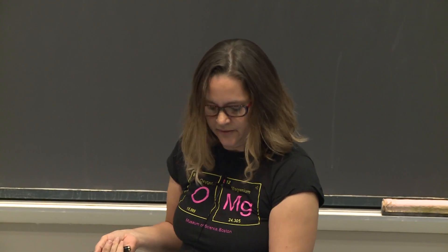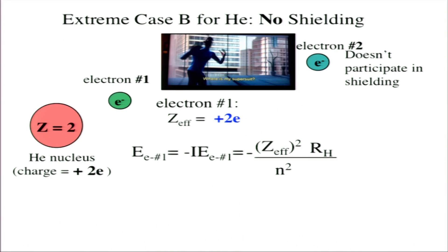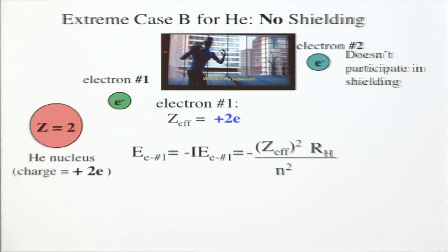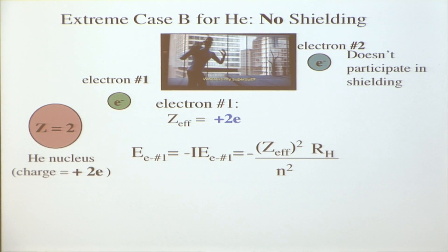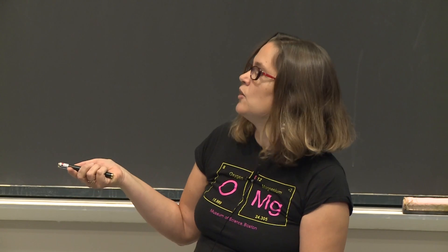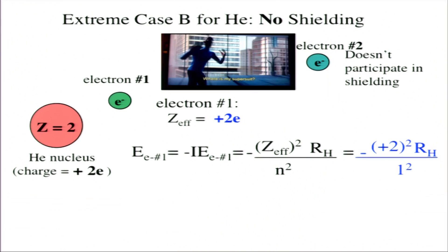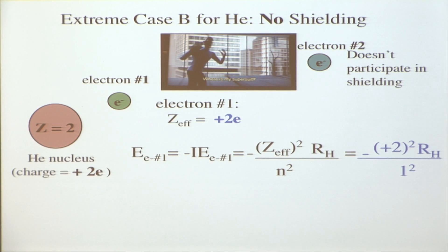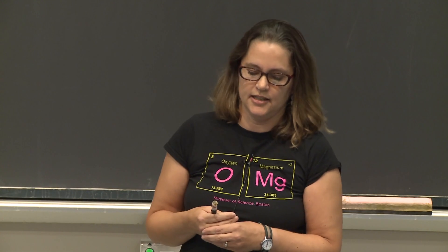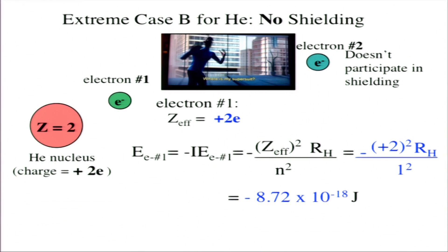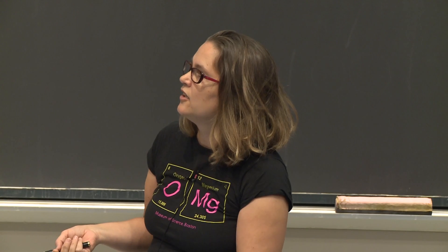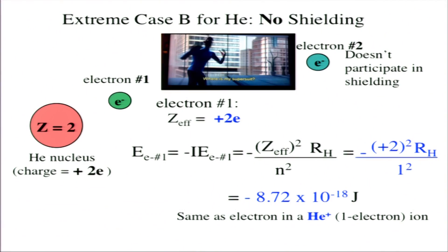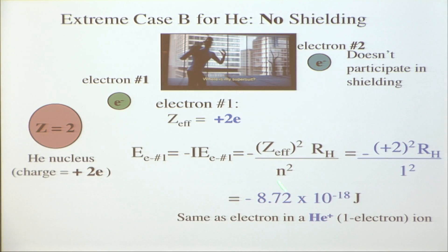We can calculate: binding energy for electron 1 equals minus the ionization energy. Now z-effective is 2, and we get a value of minus 8.72 times 10 to the minus 18 joules. This is the same as you would get for helium-plus, which is a one-electron system. In a one-electron system you use z equals 2 directly and get that value.